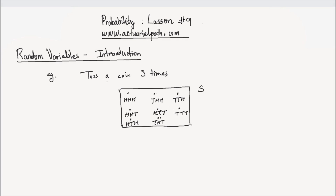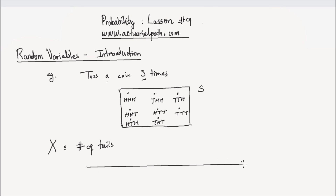What a random variable does is it assigns a numerical value to every point in your sample space. So let me consider a random variable X. Suppose the random variable X is the number of tails of the three that you toss. So you could have zero number of tails — HHH has zero tails — or maybe one tail, or maybe two tails, or maybe three tails.